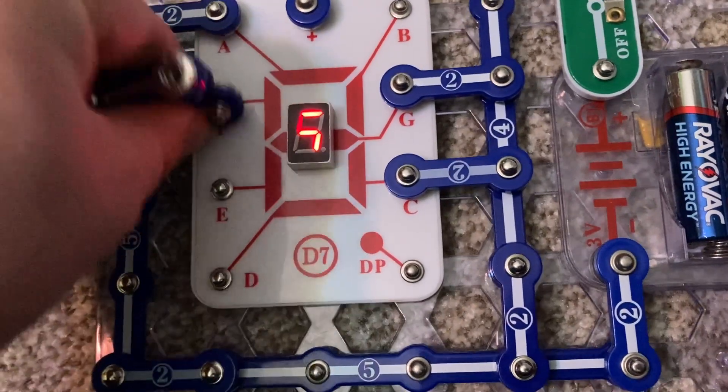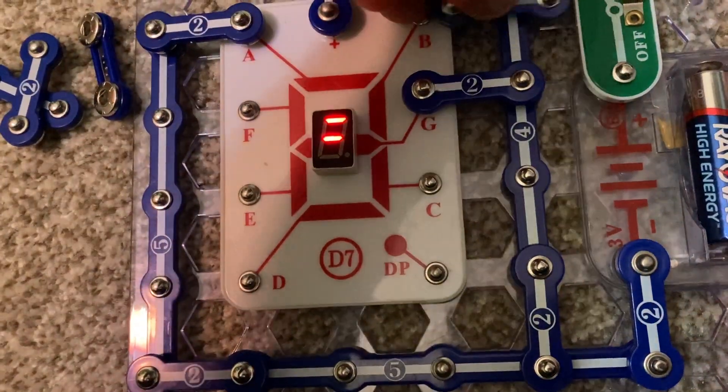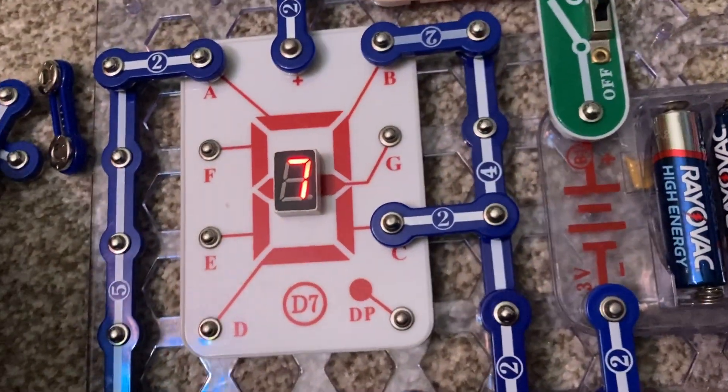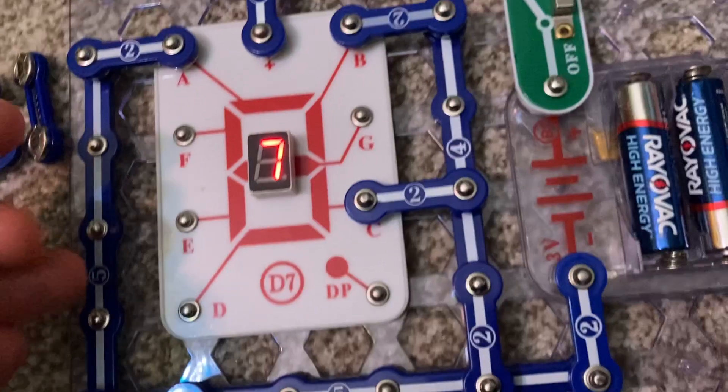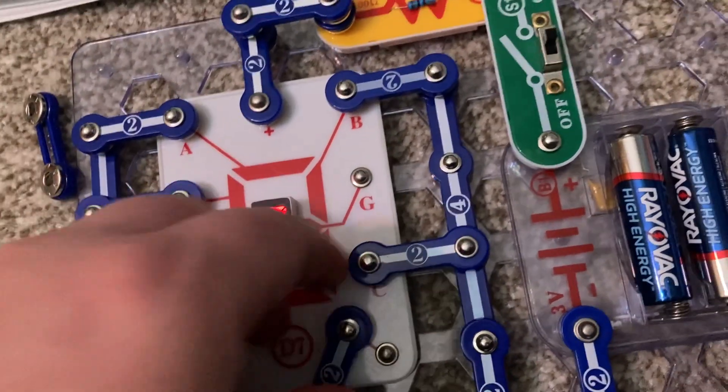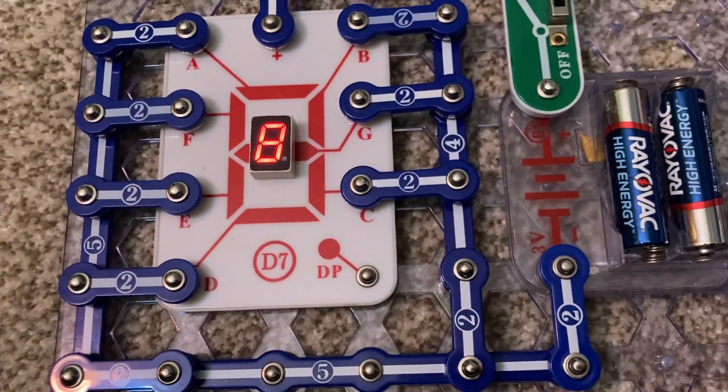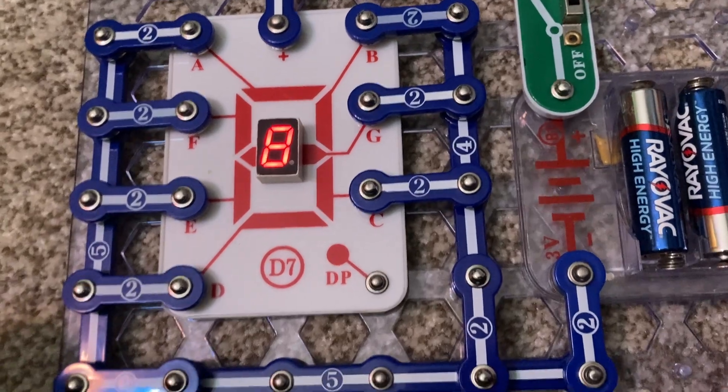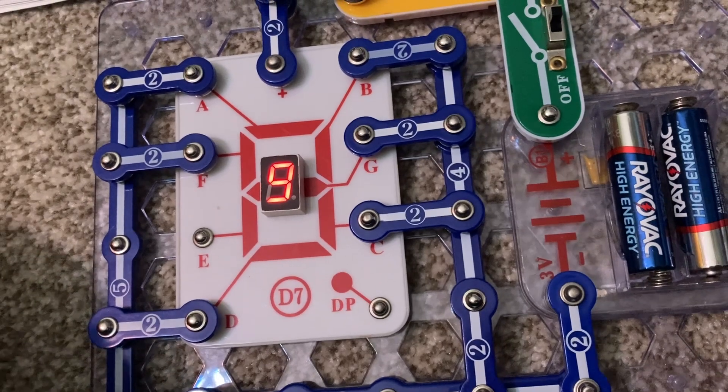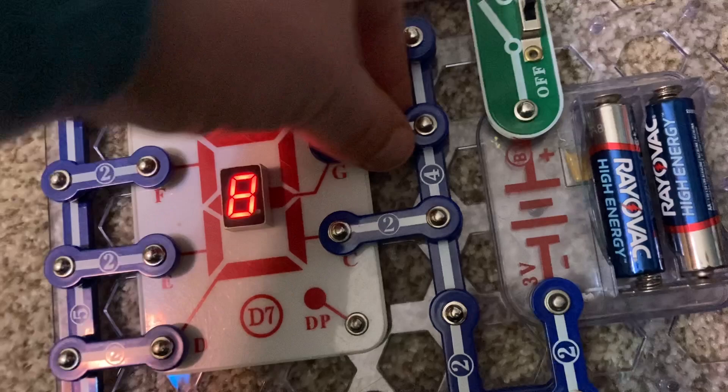For number 7, remove all these connections. And then you have the number 7. Now for number 8, you are going to connect all these points to the battery. For number 9, remove the connection on point E. And finally for 0, reinsert connection E and remove connection G.